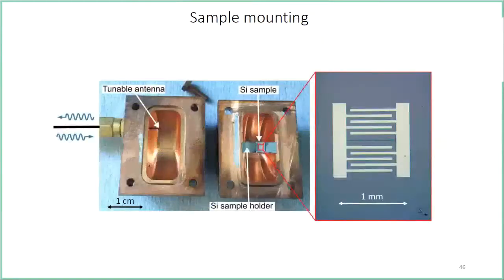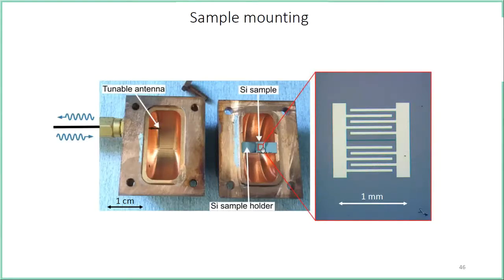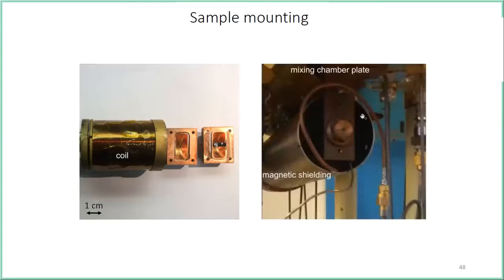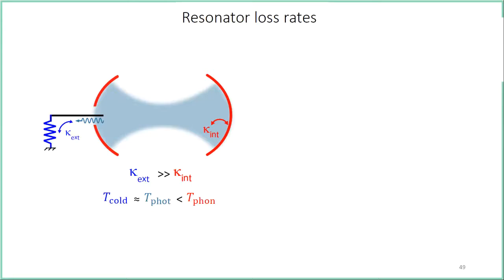Now to the experimental part. Here is a picture of our superconducting resonator on its silicon chip, inserted in a copper sample holder that is then closed. An antenna in the sample holder couples the superconducting resonator mode to the external circuit. We put this cavity in a superconducting coil mounted inside the cryostat at the mixing chamber plate at 20 millikelvin, but for the radiative cooling experiment we move it to the one-kelvin plate of the fridge.